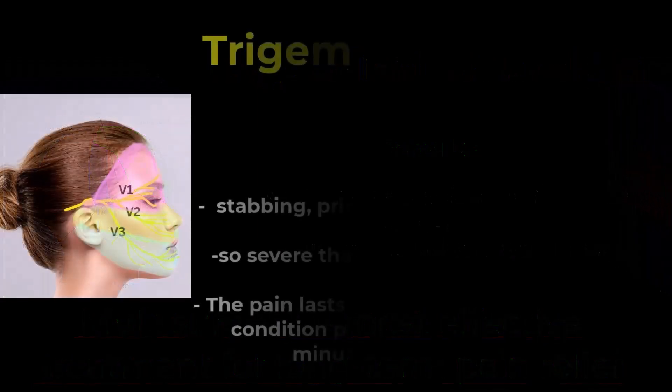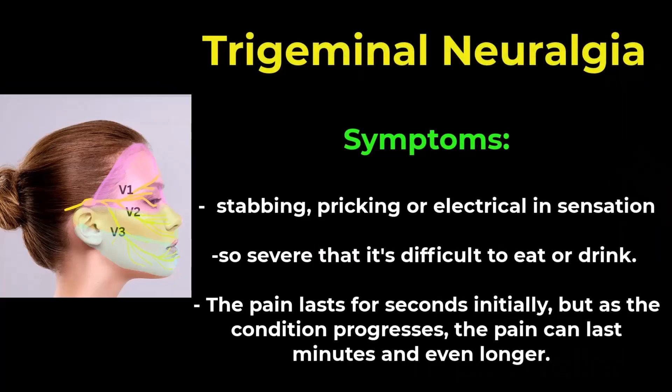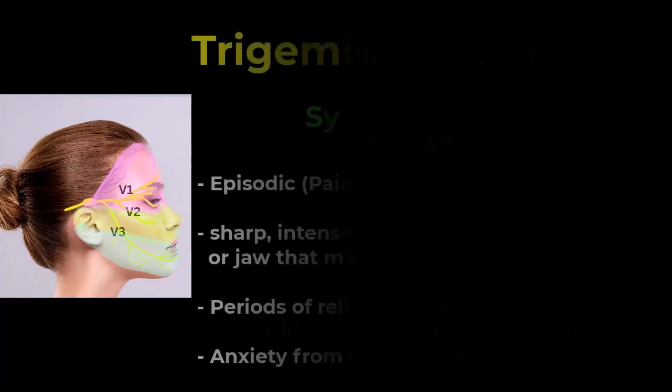The symptoms of trigeminal neuralgia are typically a stabbing, pricking, or electric shock-like pain sensation in the face in one of the three divisions — V1, V2, or V3. This pain is so severe that the patient finds it difficult to eat or drink normally. The classical characteristic is that it lasts for only a few seconds initially, but as the condition progresses, the pain can last for several minutes or longer. The pain is episodic, meaning it comes in attacks.